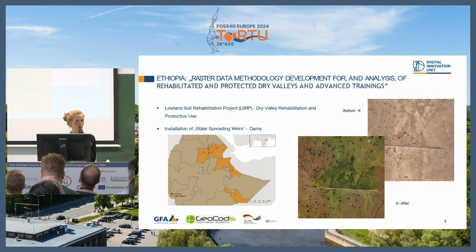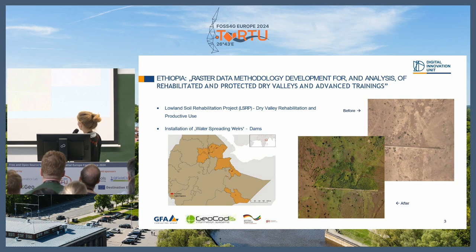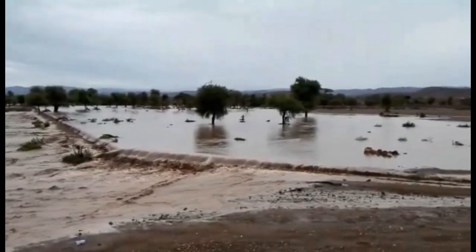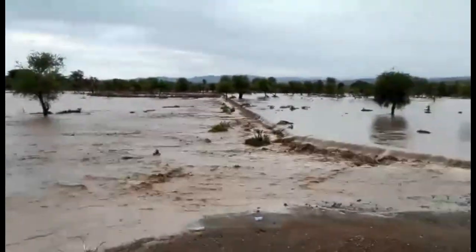We worked within the Lowland Soil Rehabilitation Project, where we were asked to come up with an approach to measure the impact that installed dams built in the river valleys had on the vegetation around them. On the right-hand side you can see what it looked like before, and then some years after, the vegetation has actually grown quite a bit. But how do we know whether it's actually because of the dam or not? This is what it looks like in real — when installed, it keeps the runoff from precipitation where it is, and ideally this should increase moisture over time.